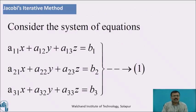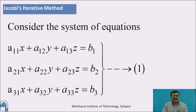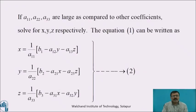Jacobi's Iterative Method. Consider the system of equations: a11x plus a12y plus a13z is equal to b1; a21x plus a22y plus a23z is equal to b2; a31x plus a32y plus a33z is equal to b3. Call it as equation 1. If a11, a22, a33 are the diagonal elements and are large as compared to other coefficients,